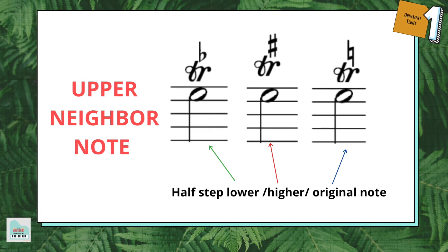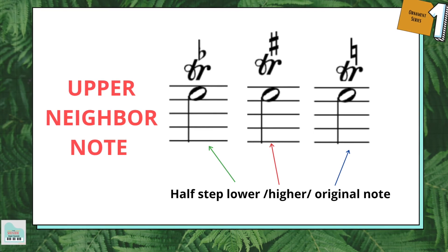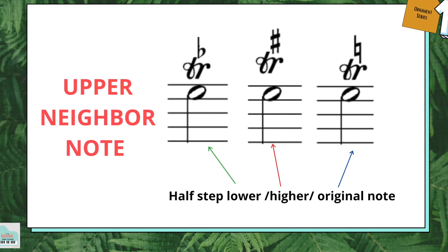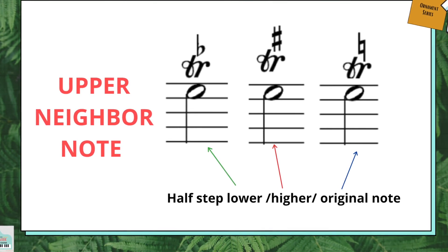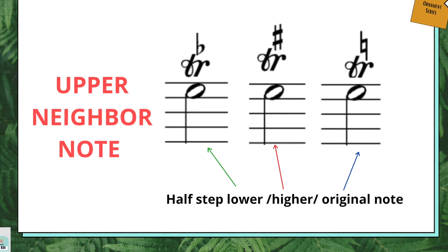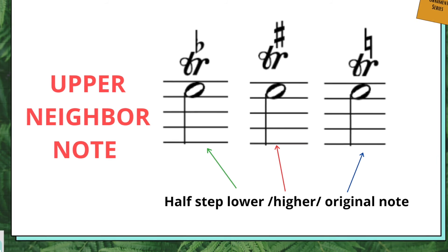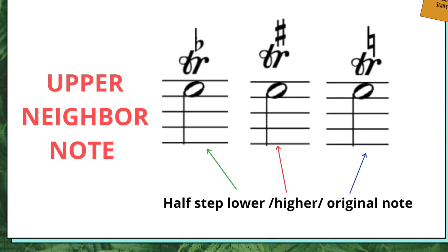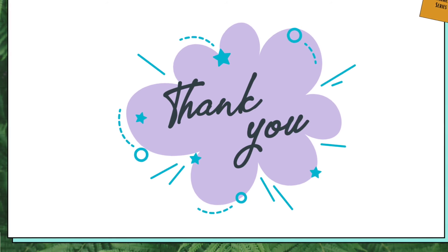The last thing about trills I want to talk about is the accidental sign — sometimes you will see a flat, a sharp, or a natural sign above the trill. It refers to the upper auxiliary note, whether you play the upper auxiliary note first or the main note first. This accidental sign is related to the upper auxiliary note only. For example, in bass clef, if the note is a G, a flat above the trill means the upper auxiliary note will be A-flat; with a sharp, the upper auxiliary note will be A-sharp.